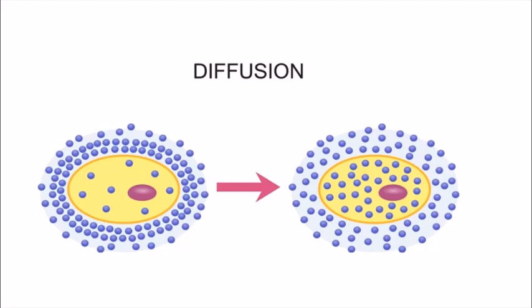From the higher concentration region, molecules go to the lower concentration region — this is diffusion. In the picture, you can see two regions: the outer region and the inside region. When smaller molecules move from higher concentration to lower concentration through the membrane, this is called diffusion.